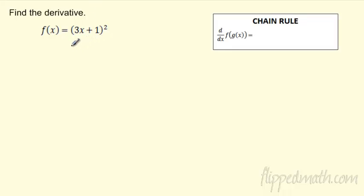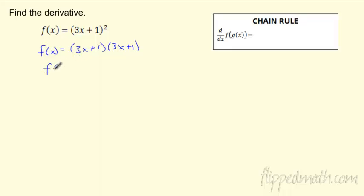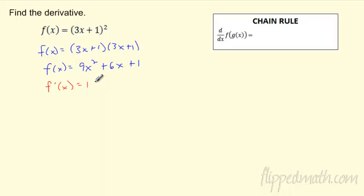Remember, (3x+1)² is really just this. I can multiply this out — and don't write this down, I'm going to show you the chain rule in a second — but just to verify the chain rule does indeed work. If I multiply this out, I'll get 9x² + 6x + 1. And then I could take the derivative: 18x + 6.